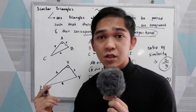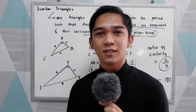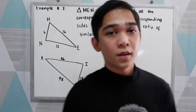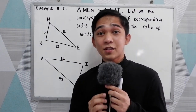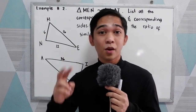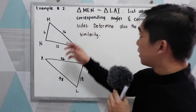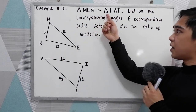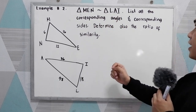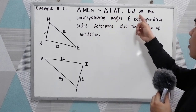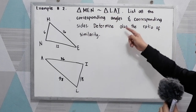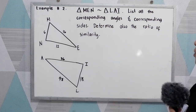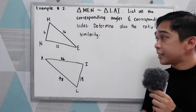Let us proceed to example number 2. Triangle MEN is similar to triangle LAI. List all the corresponding angles and corresponding sides, and determine also the ratio of similarity.